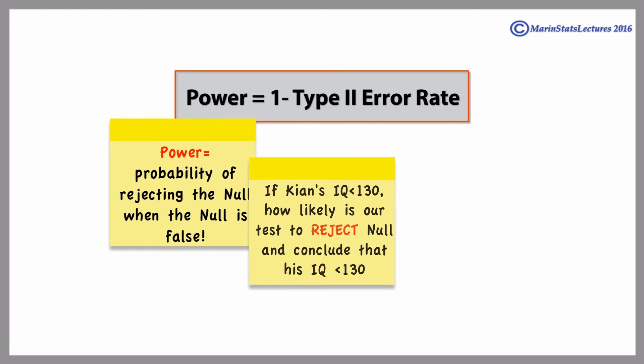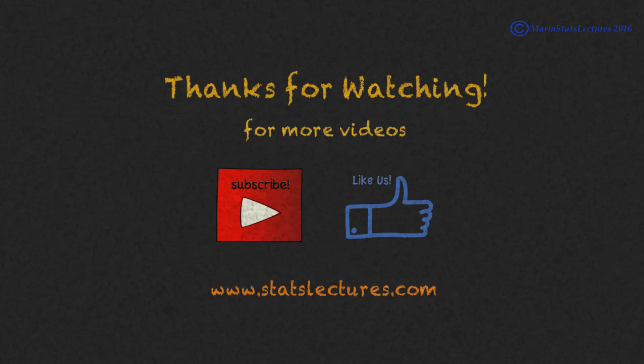It tells us if Kian's IQ really is less than 130, how likely is our test to reject the null hypothesis, and conclude we have evidence to believe his IQ is less than 130. Alright, that's it for me.